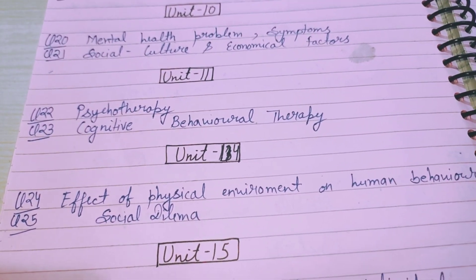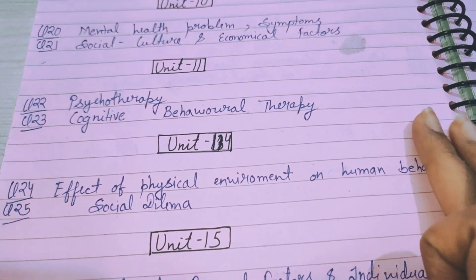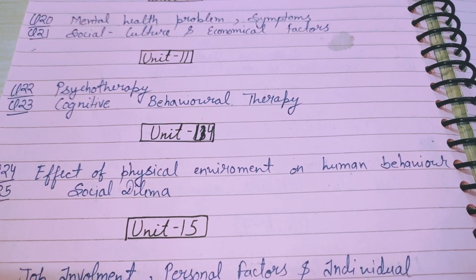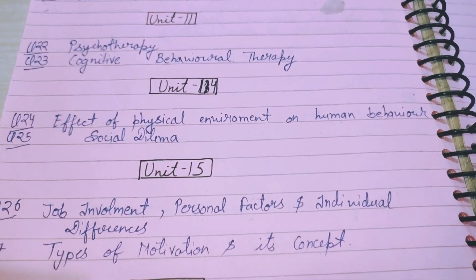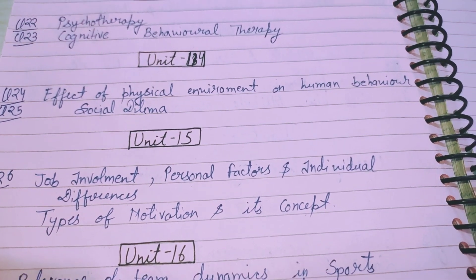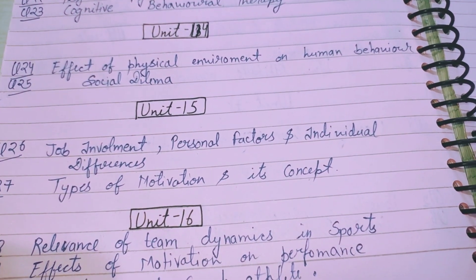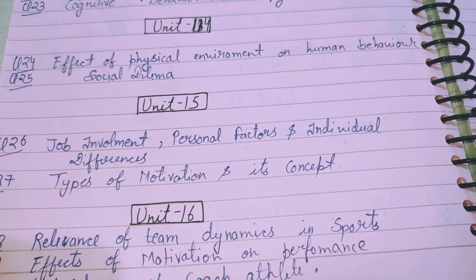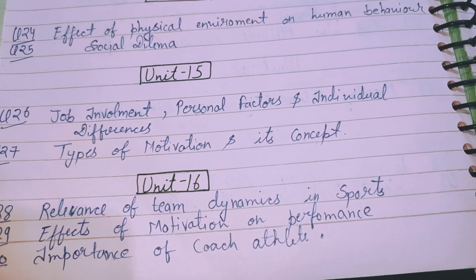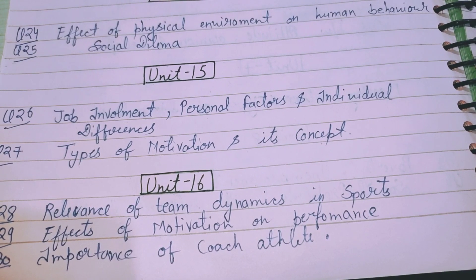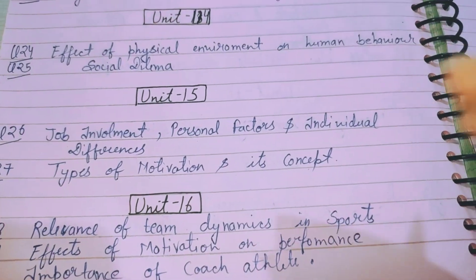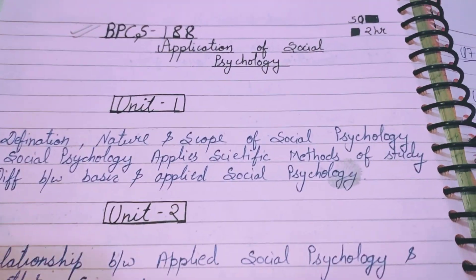Unit 10: Question 20 - mental health problems and their symptoms, social, cultural and economic factors. Unit 11: Question 22 - psychotherapy. Question 23 - cognitive behavioral therapy. Unit 14: Question 24 - effect of physical environment on human behavior and social dilemma. Question 26 - job involvement, personal factors and individual differences. Question 27 - types of motivation and its concept. Unit 16: Question 28 - relevance of team dynamics in sports. Question 29 - effects of motivation on performance. Question 30 - importance of coach-athlete relationship.